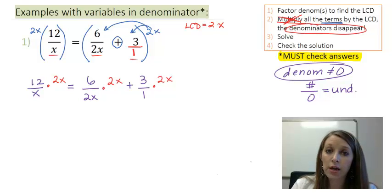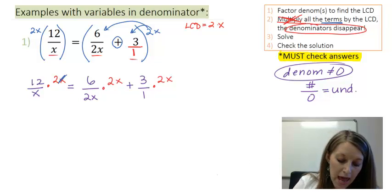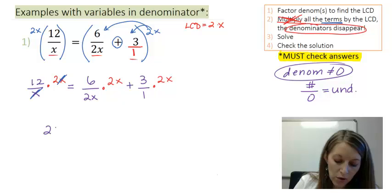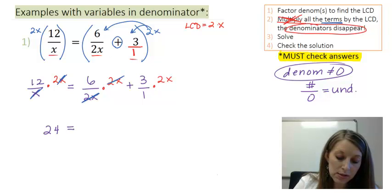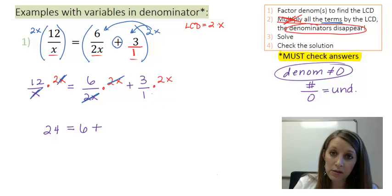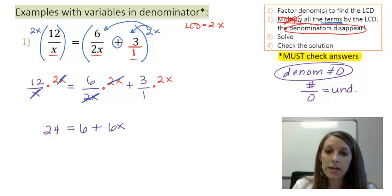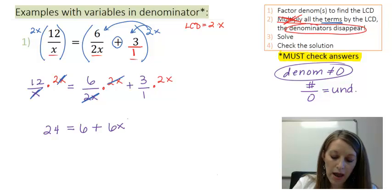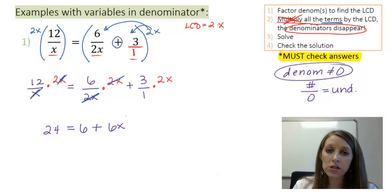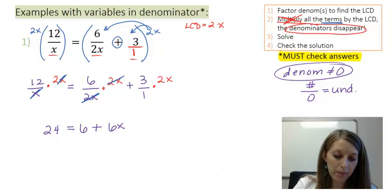That's why it's called the magic trick — to make sure all of my fractions disappear. On the left, my x divided by x cancels out, leaving me with 12 times 2, or 24. In the middle, my 2x over 2x cancels out, leaving me with 6. On the right, I cannot do any canceling, so I end up with 3 times 2x, or 6x. At this point I'm down to a degree-1 equation with no fractions, so I can just solve by isolating my variable.